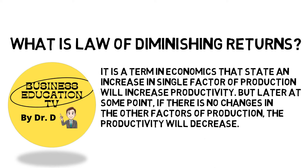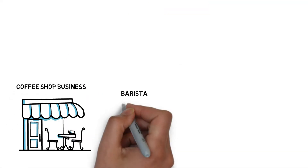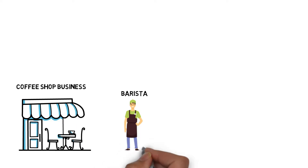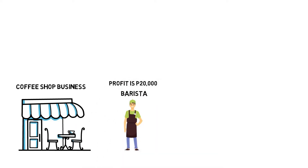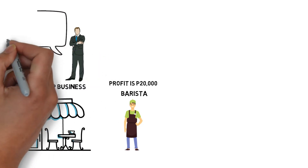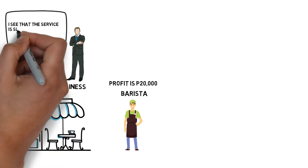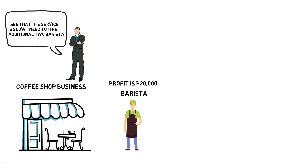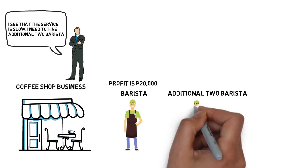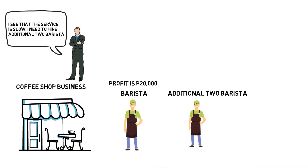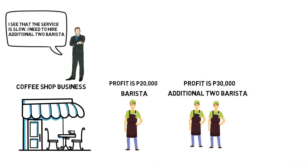For example, you started your own coffee shop and hire one barista in your store. At this rate, your profit is $20,000 per month. But you notice that the service is low since you have only one barista, so you decided to add two more baristas. With a total of three baristas, your profit increased to $30,000 per month.